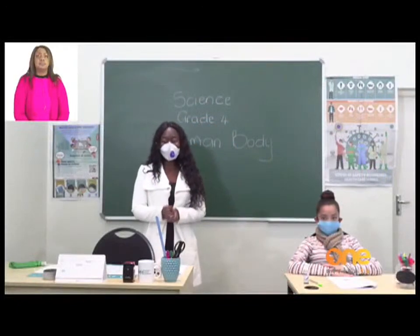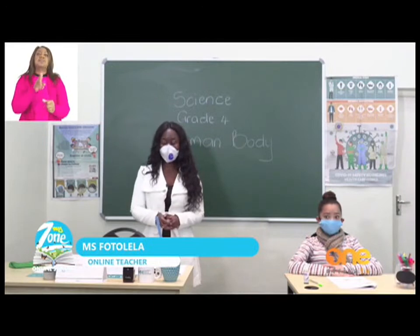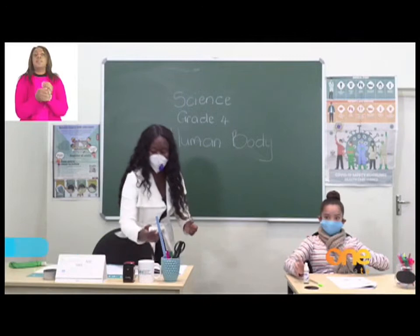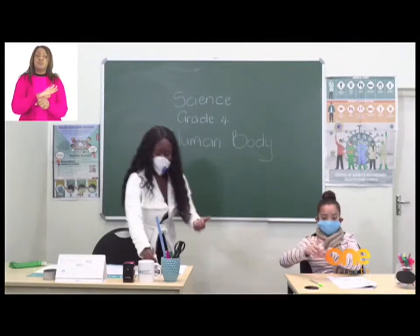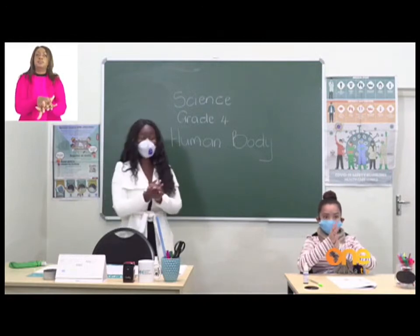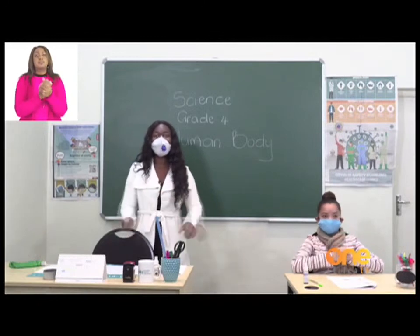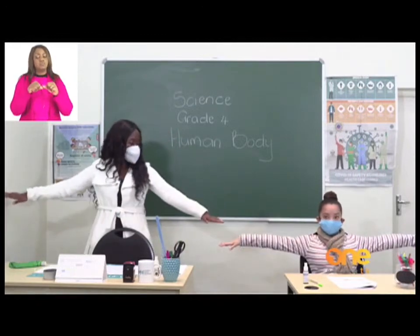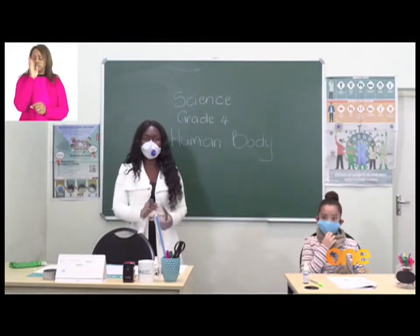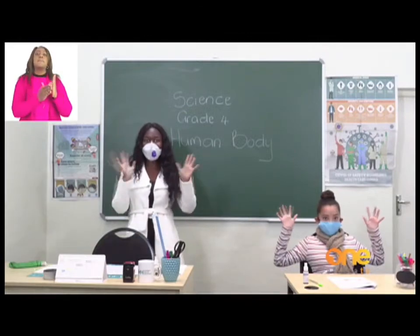Now let's do a short activity. Number one: identify the different systems of the human body — look at the picture, identify all the different systems and write their names. Number two: describe the basic function of (a) the respiratory system and (b) the excretory system. This is the end of our lesson. The memorandum is at the back of the booklet. Let's sanitize our hands again — spray, wrap your hands in and out, between the fingers, around the thumb. Practice social distance, wear your mask. Stay home and stay safe.